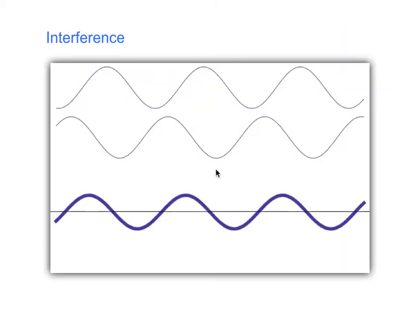When two waves are at the same place at the same time, they exhibit a phenomenon called interference, which we're going to see in this animation. There's a stationary wave at the top, and a second wave will move from left to right and mix with the first wave. Down here we're going to see the result of mixing those two waves together. Let's watch and see what happens.